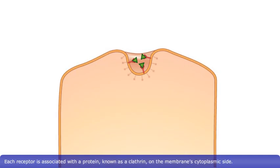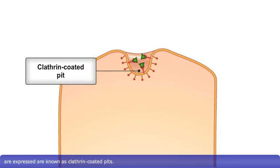Each receptor is associated with a protein, known as clathrin, on the membrane's cytoplasmic side. The regions of the plasma membrane in which these receptors and their associated clathrin molecules are expressed are known as clathrin-coated pits.